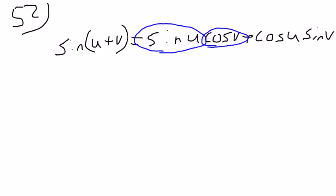So I'll write that below. Sine of u is negative 7 25ths. Cosine of v is negative 4 5ths.